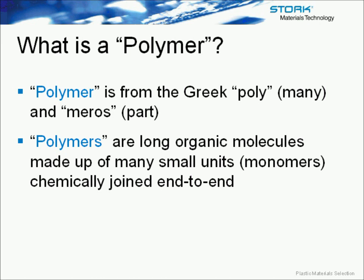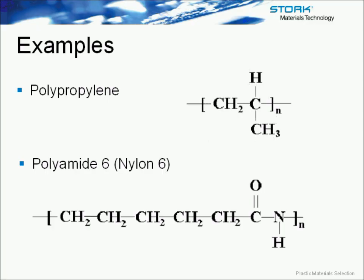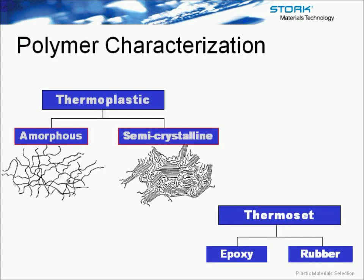A polymer is basically small chemical units bonded together to make up long organic molecules. Examples include polypropylene, which is just a repeating structure of what you see on the screen, as well as nylon 6, which is just a repeat of that smaller molecule seen there.